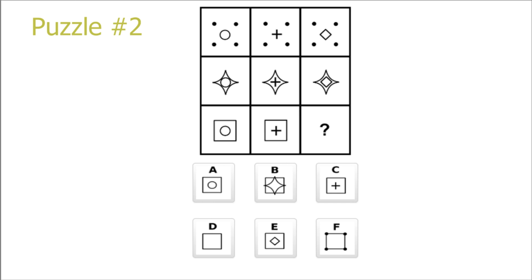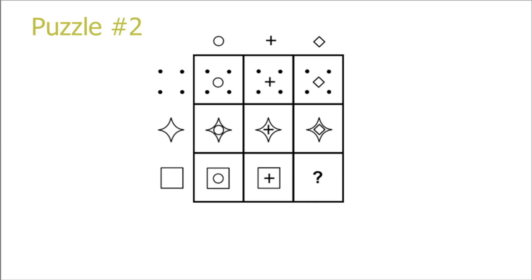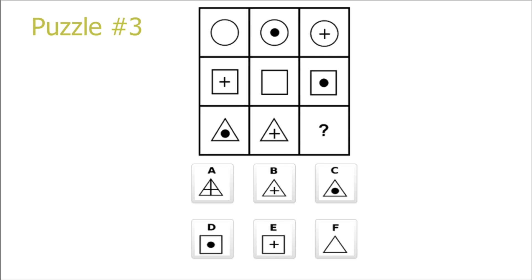Puzzle 2. Looking from top to bottom, we see that the first column only has a circle in the middle, the second column only has a plus sign in the middle, and the last only has the rotated square in the middle. Looking at the rows, we see 4 dots repeating in the first row, a star in the second row, and a square in the last row. Therefore the picture will have a square with a rotated square inside of it, and the correct answer is E.